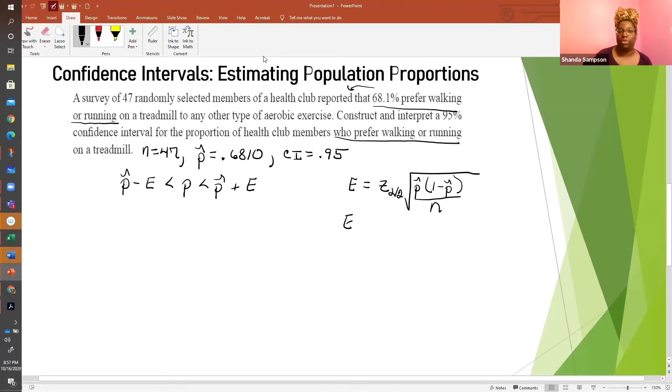So we're saying Z alpha over 2. So alpha is going to equal 1 minus 0.95, which is equal to 0.05. And that gives us Z 0.05 over 2, Z 0.025. And 1 minus that, this should be familiar, is going to be 0.975. So I'm looking up on my chart, Z 0.975 is 1.96. So Z alpha over 2 equals 1.96 times the square root of 0.6810 times 1 minus 0.6810, all over N is 47.